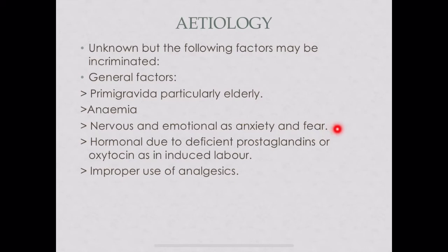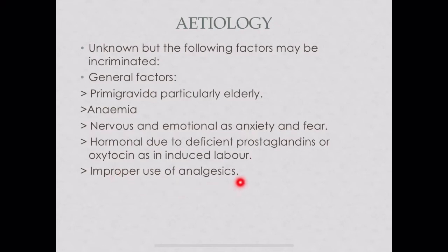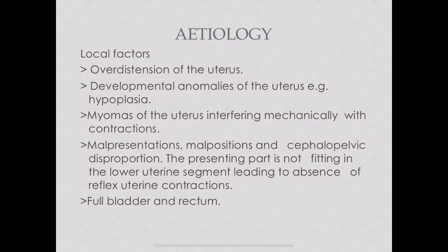Additional general etiological factors: hormonal causes such as deficient prostaglandins or oxytocin as in induced labor; and improper use of analgesics in large amounts, which can suppress contractions. Local factors include over-distension of the uterus, as seen in multiple pregnancy, hydrocephalus, or polyhydramnios.